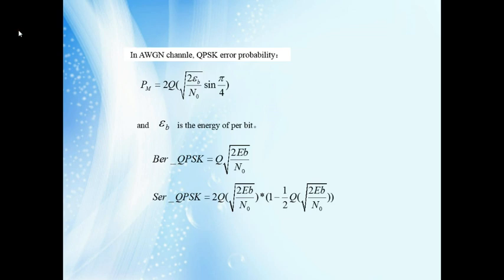In the AWGN channel, the QPSK error probability can be described by the equation as follows. We can see the energy per bit can be obtained by the following two equations.